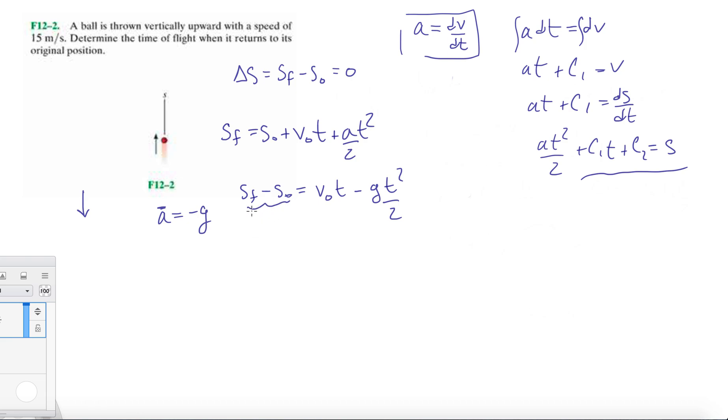Here we know displacement is zero, initial velocity is 15 times time, we don't know that, that's what we're trying to get. Over here we get roughly 4.9 t squared.